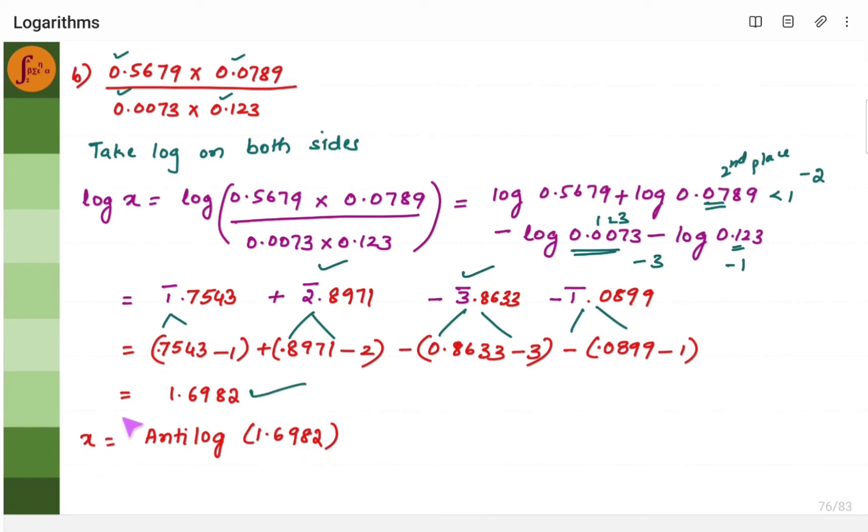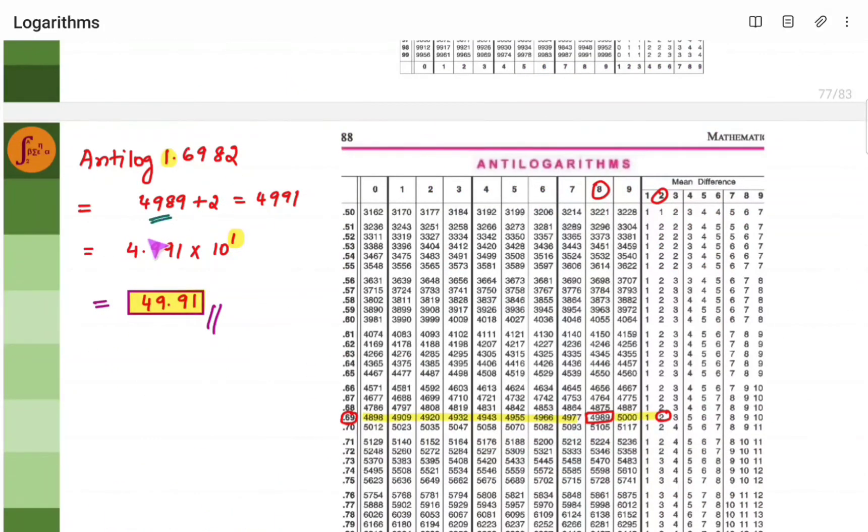Now you find the antilog. This is log x. So x will be antilog of this much. Find the antilog. So you get antilog as 4989. Put the decimal point 4.991 into 10 to the power 1 because we have 1 here. So you get 49.91.